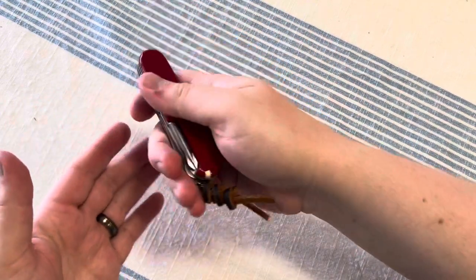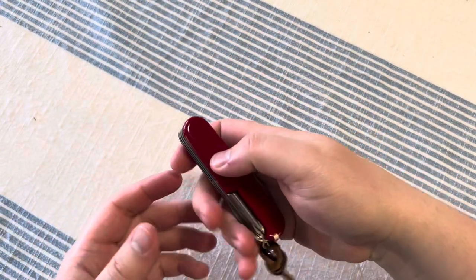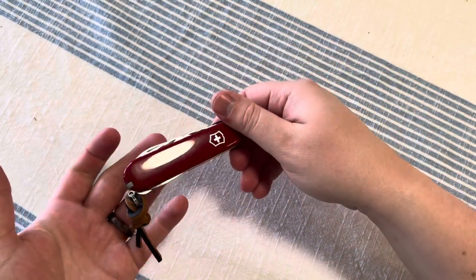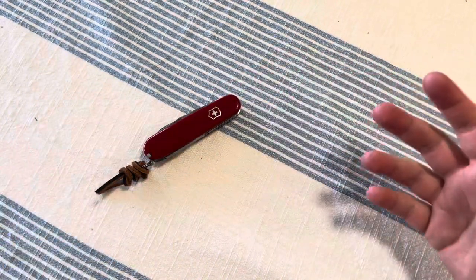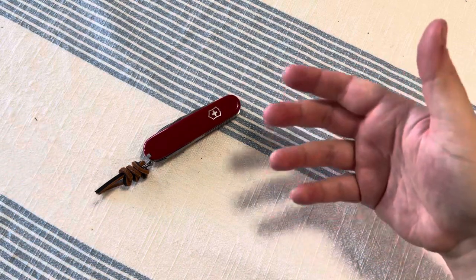Because you can use that corkscrew to get knots undone. You can work your way in there on knots. And then the little eyeglass screwdriver is nice because everyone wears sunglasses or you know someone who wears eyeglasses.